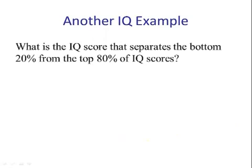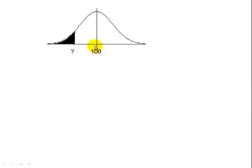Let's look at another example. What is the IQ score that separates the bottom 20% from the top 80%? This is the same thing as saying what is the 20th percentile. Our first step, we draw a picture. In this case, the score is going to be less than 100 because this is the 50th percentile. We are wanting the 20th percentile. So this area here is 20%.